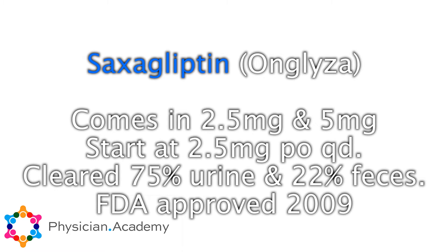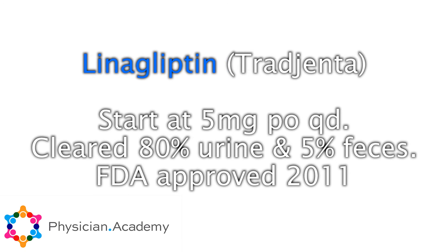Saxagliptin comes in a 2.5 and a 5 milligram. We usually start that one at 2.5 milligrams daily, with a max of 5 milligrams daily. This one is cleared 75% in the urine and 22% in the feces. Linagliptin comes as a 5 milligram daily tablet, started once a day, and that's cleared 80% in the feces and 5% in the urine.